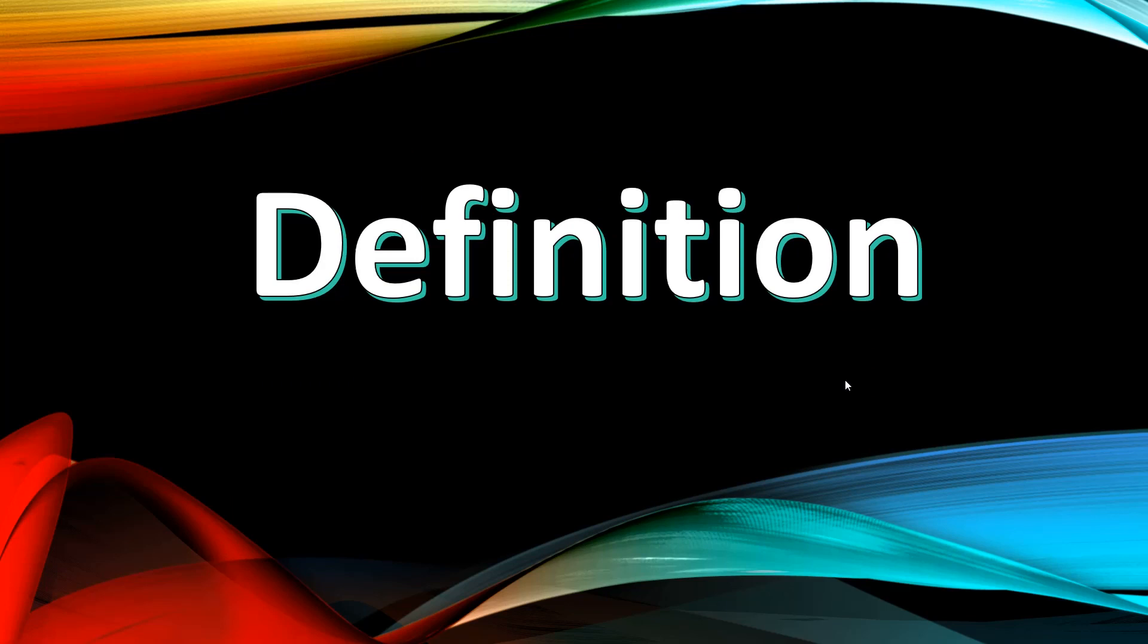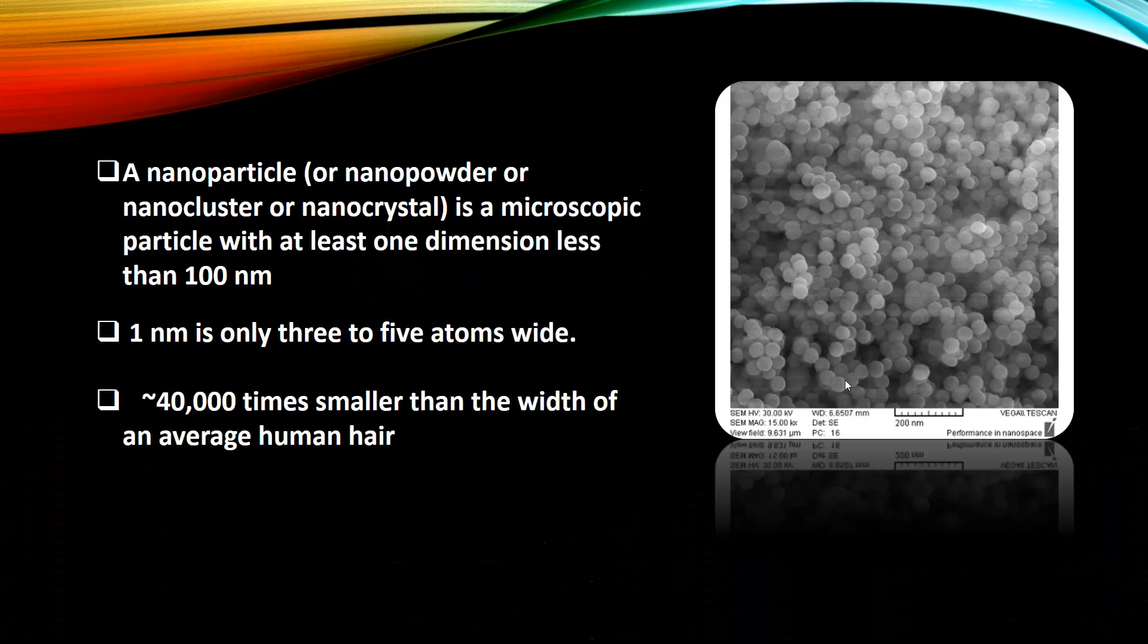First definition. A nanoparticle is a microscopic particle with at least one dimension less than 100 nanometers. One nanometer is only three to five atoms wide, 40,000 times smaller than the width of an average human hair.